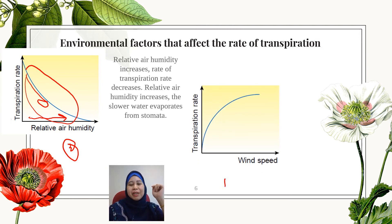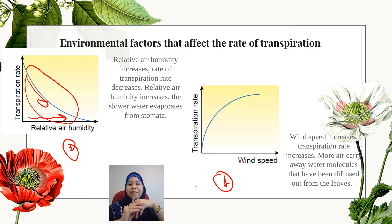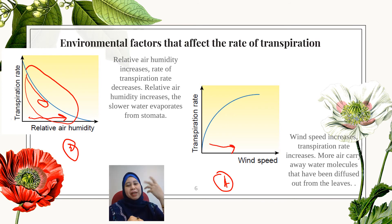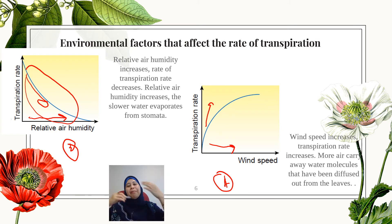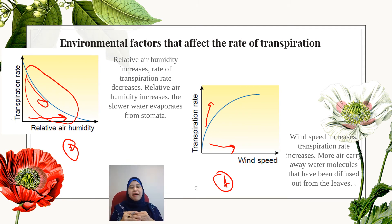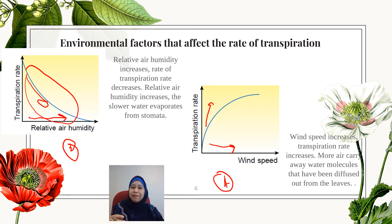The last factor is wind speed — how the speed of wind affects the transpiration rate. From the graph, we can see that as wind speed increases, the transpiration rate will also increase, because there is more air in the surroundings that can carry away the water molecules that have been evaporated from the leaves.